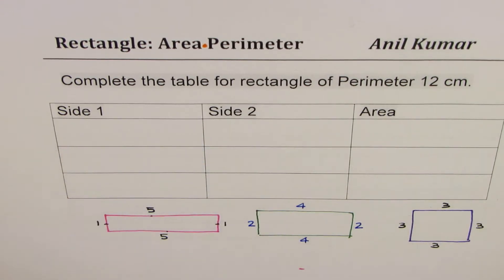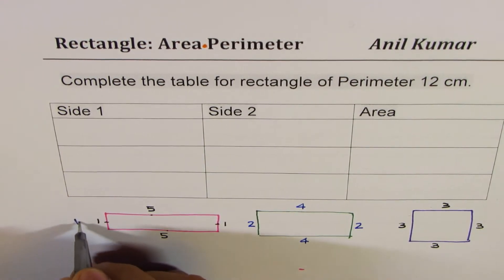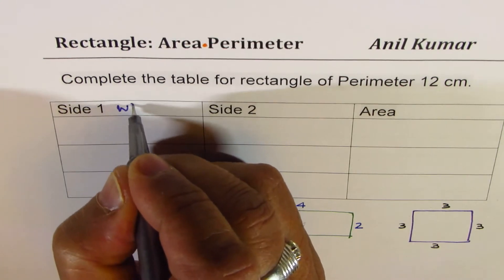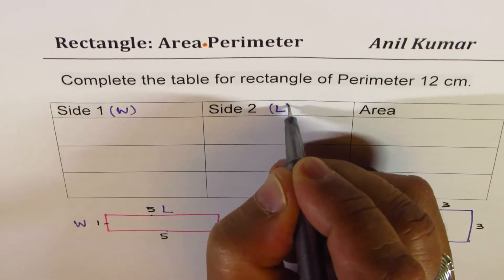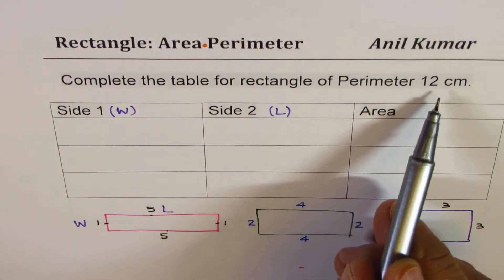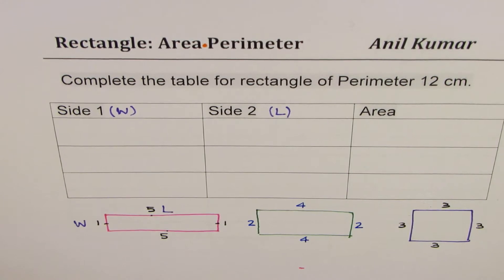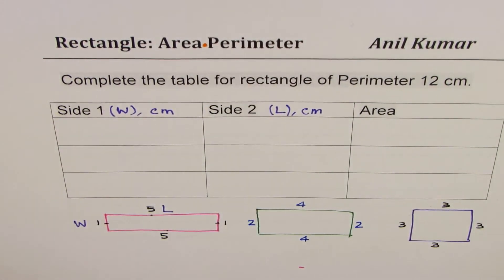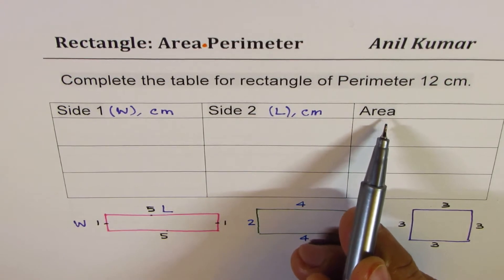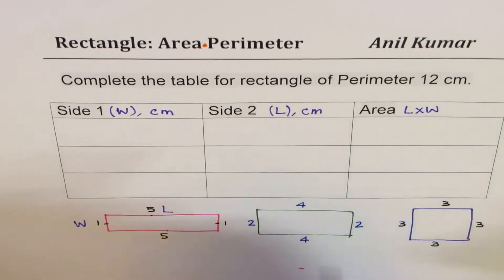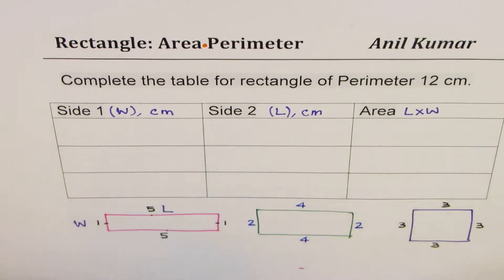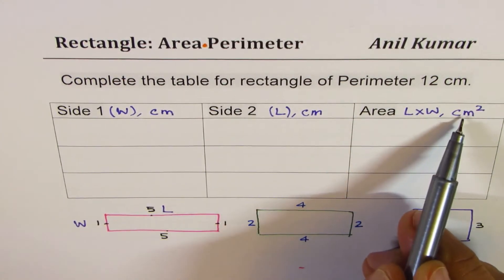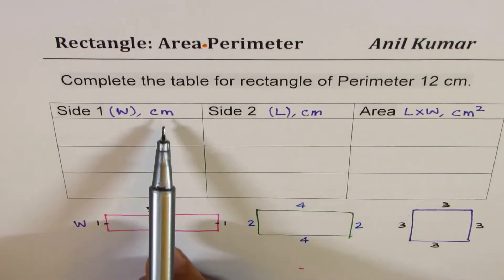Side 1 will be our width and side 2 will be our length. Since the perimeter is given in centimeters, the units for side 1 and side 2 are centimeters. For area, we use length times width, and when you multiply centimeters by centimeters you get centimeters squared. So note this difference: side lengths are in centimeters, area is in centimeters squared.